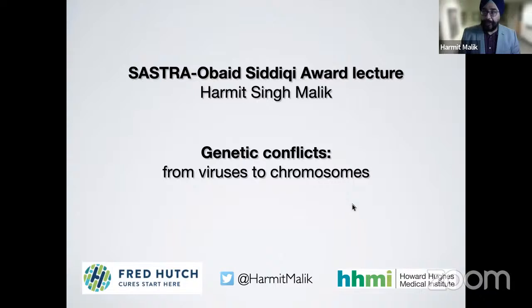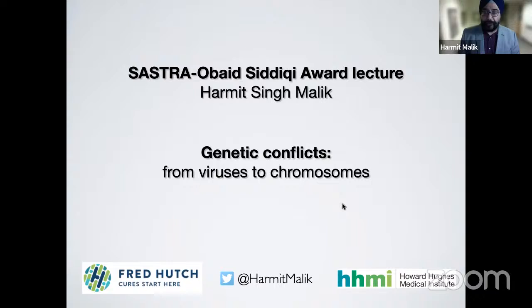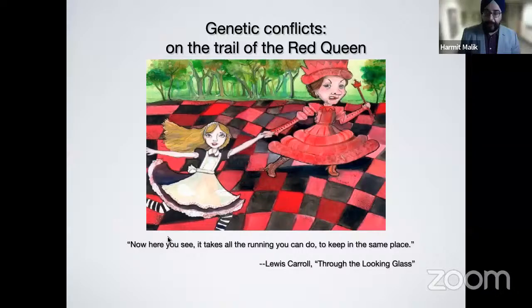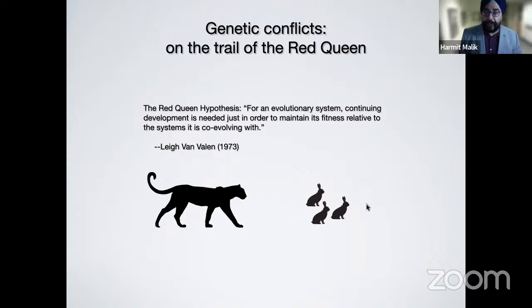Today I'm honored to give the Obaid Siddiqui Award Lecture, and my lecture is going to be focused on genetic conflicts from viruses to chromosomes. The work in my lab is focused on genetic conflicts, which has its roots in a very unusual source — the fictional character the Red Queen, introduced in Lewis Carroll's Through the Looking Glass, where Alice complains they've been walking for a long time and not getting anywhere. The Red Queen replies that in Wonderland, it takes all the running you can do to keep in the same place.